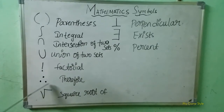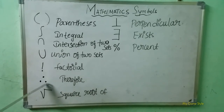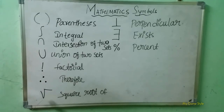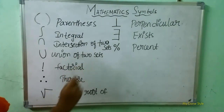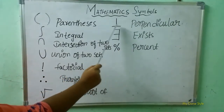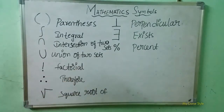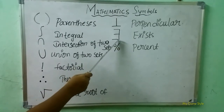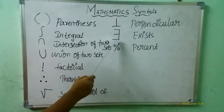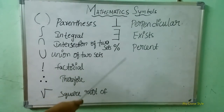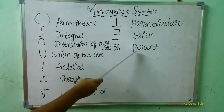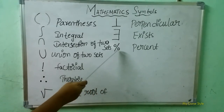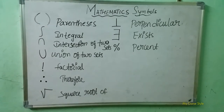Next, here what is this symbol children? This is called therefore symbol. Here what is this symbol? This is a square root symbol. Next, here what is this symbol? This is called perpendicular symbol. Next, here what is this symbol? This is an exists symbol. Next, here what is this symbol? This is a percentage symbol. This is how we need to learn mathematical symbols.